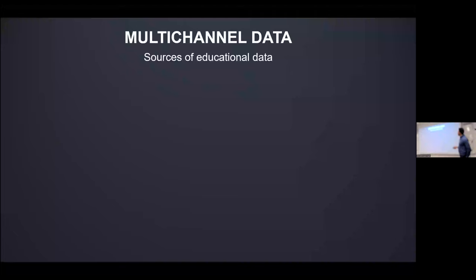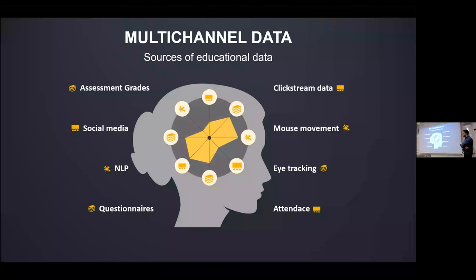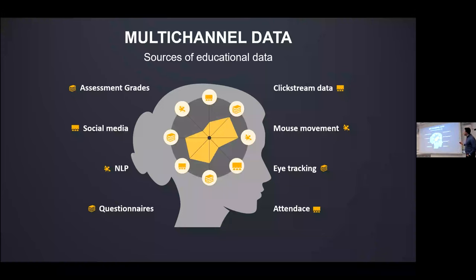So what data does learning analytics use? An interesting term is 'multi-channel data.' When we use systems at the university, we have the campus system, MOOCs like Coursera, and many other systems generating a lot of data. One of the main data types is called clickstream data — whenever you interact with the system, that's preserved. Researchers use that to get attendance information, clustering, and comparing students to see whether they are at risk of failing.